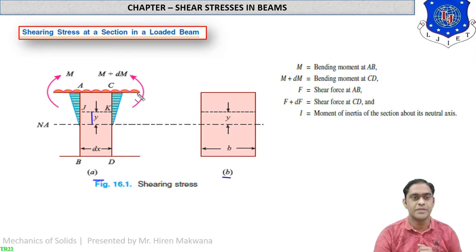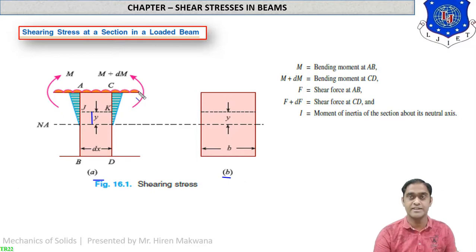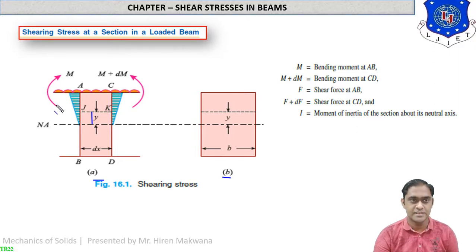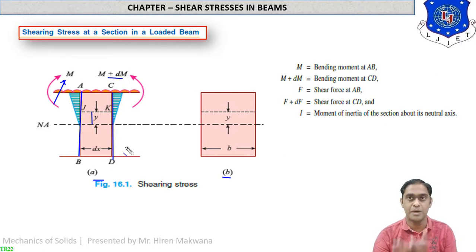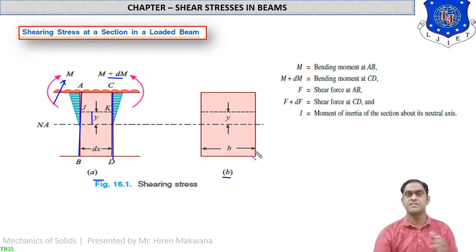On top of the beam, at the free surface, a UDL is acting. UDL means vertical force which can be considered as a shearing force. This load generates bending moment M on section AB, and the opposite bending moment M plus dM on section CD. The layers AB and CD are at a distance dx apart. The width of the beam b is visible in the side view only.